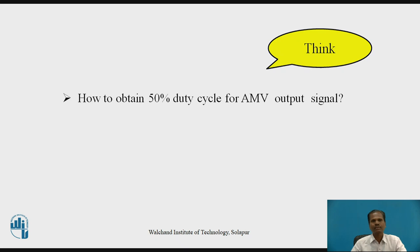That's why the duty cycle is more than 50%. To get a 50% duty cycle, if we make the capacitor charging time equal to the capacitor discharging time, the time duration for which the output remains high becomes equal to the time it remains low. In this way, the output is converted from a rectangular wave to a square wave signal with 50% duty cycle.